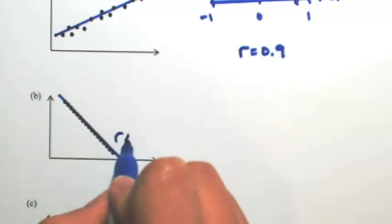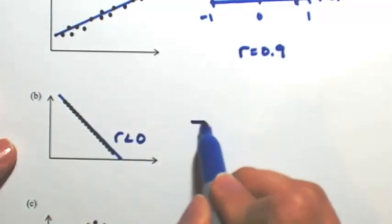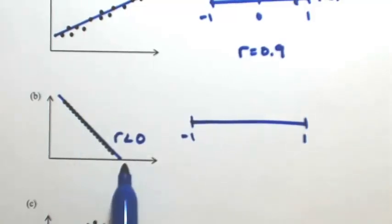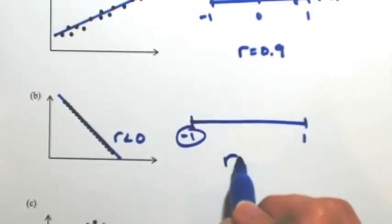And because it has a negative slope, your r is going to be less than zero. So it ranges between negative one and one. Since it's negative and it's perfect, r is equal to negative one.